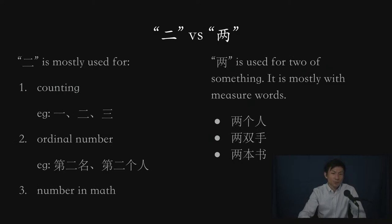The main differences between 二 and 两 are listed here. Number one, 二 is mostly used for counting. When you're counting 一, 二, 三, you're going to be using 二 instead of 两.